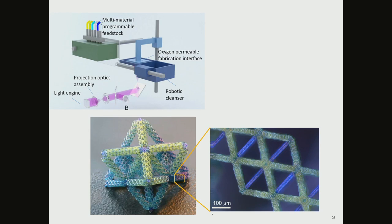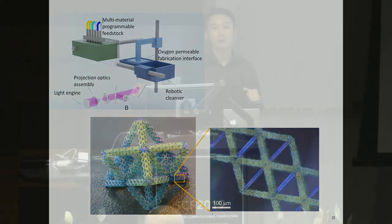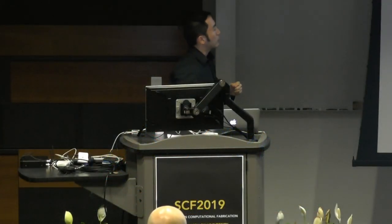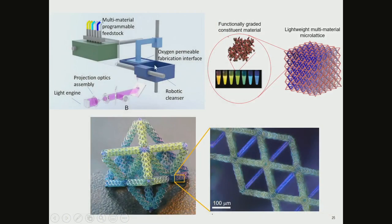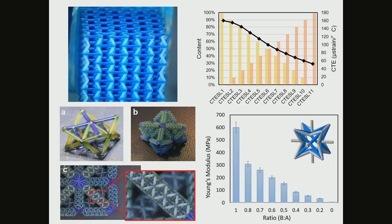We are also developing a method that allows multi-material light-based projection through lithography. You can switch between different feedstocks and inject them into the UV-sensitive chamber, switching between different feedstock materials during fabrication. You end up with multicolored lattice structures with microscale feature size, where each color doesn't only represent appearance but represents distinct material properties — from functional materials to materials with different stiffness or even different thermal expansion coefficients — co-printed inside a three-dimensional architecture.